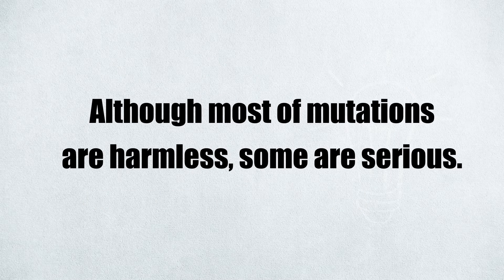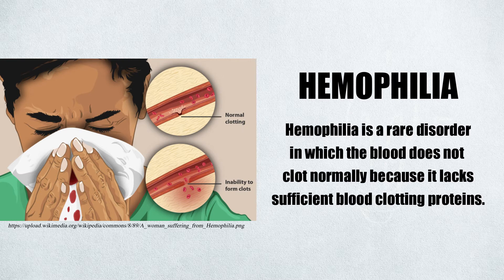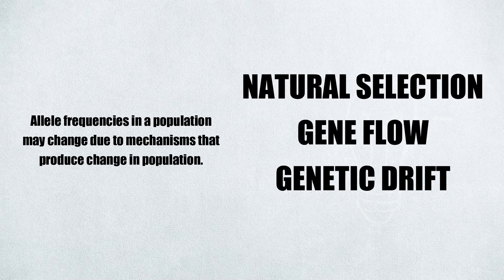Although most mutations are harmless, some are serious. An example of a serious condition is hemophilia — a rare disorder in which the blood doesn't clot normally because it lacks sufficient blood-clotting proteins. Allele frequencies in a population may change due to mechanisms that produce change in population: natural selection, gene flow, and genetic drift.